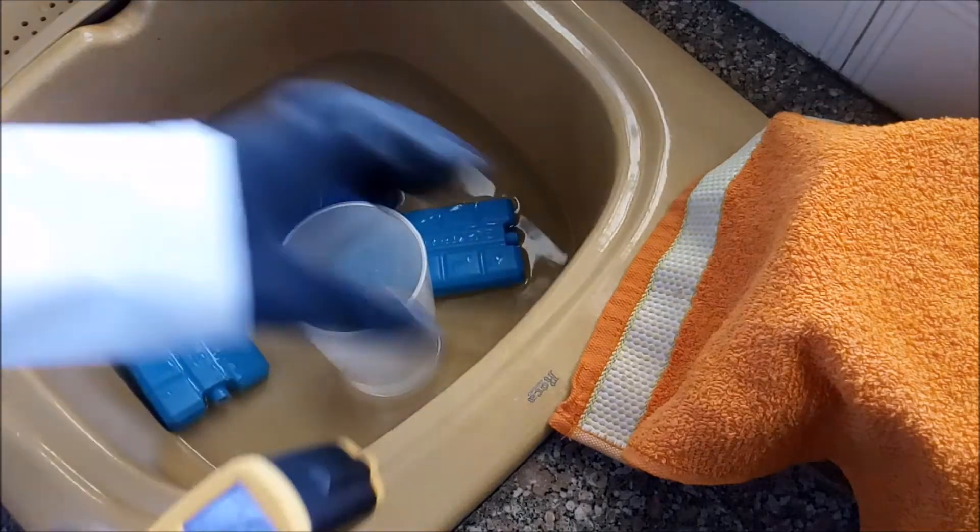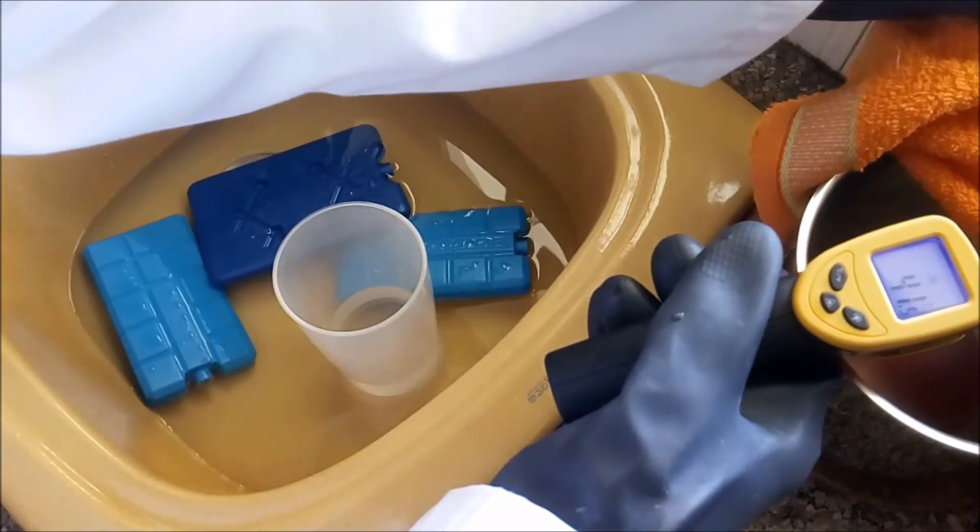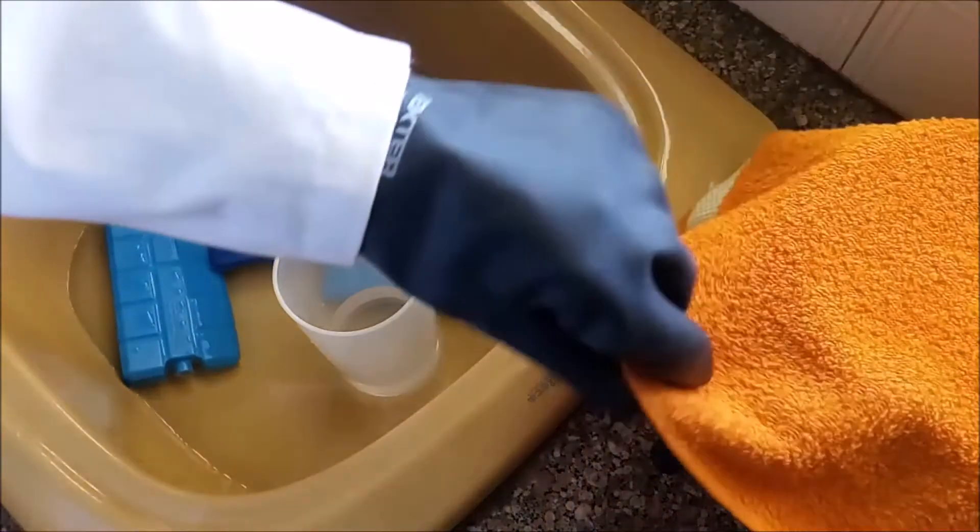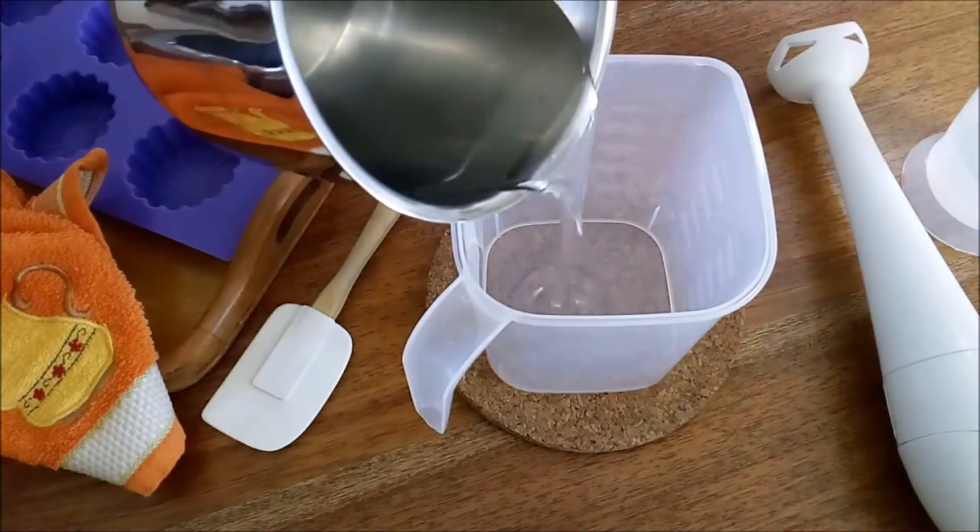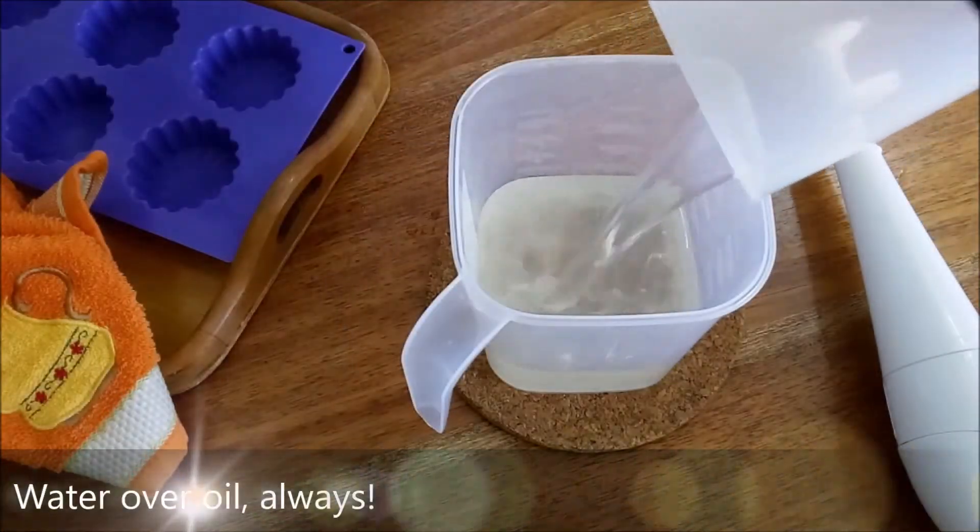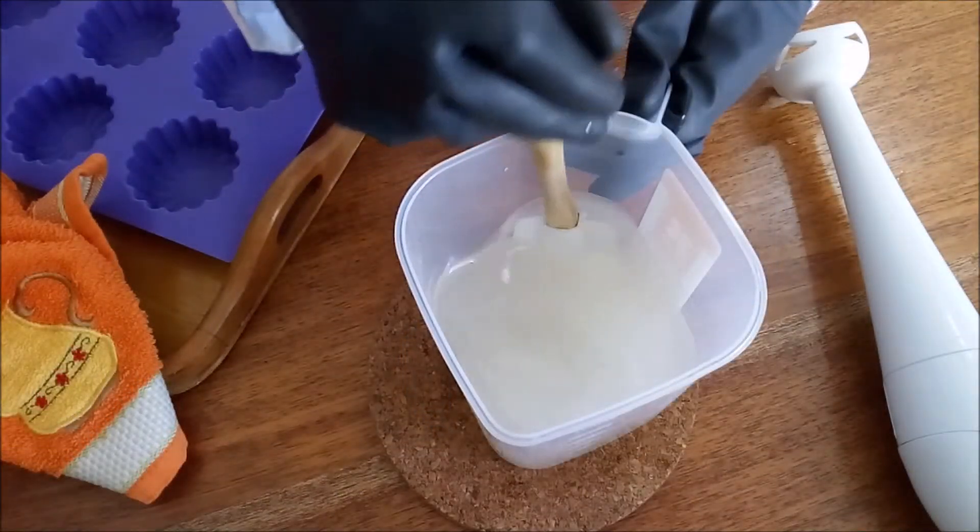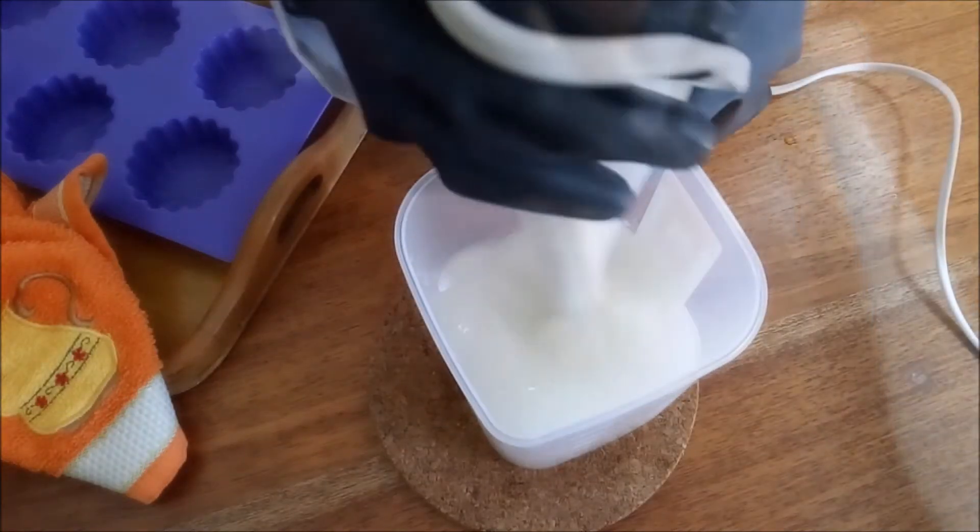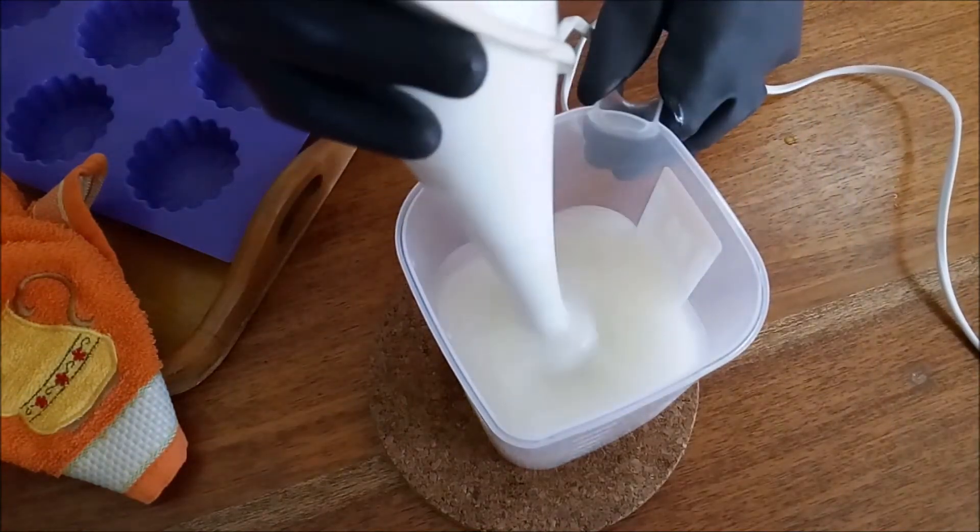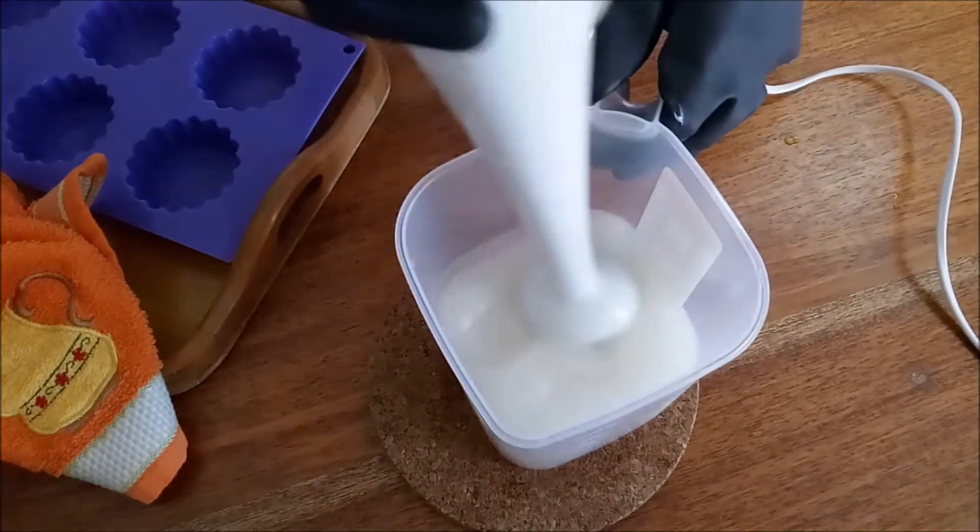Both solutions should be at about 45 degrees celsius. Both should be at the same temperature or with a maximum difference of 10 degrees. And then add the water solution to the oil. The water over the oil never the other way around. Mix first with a spatula and then with a hand blender exclusive for this purpose. After using a hand blender in contact with soda it cannot be used again in contact with food.